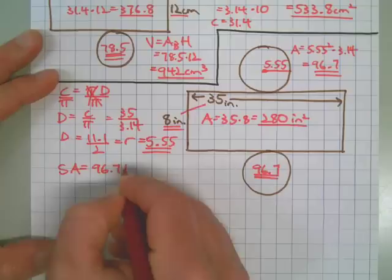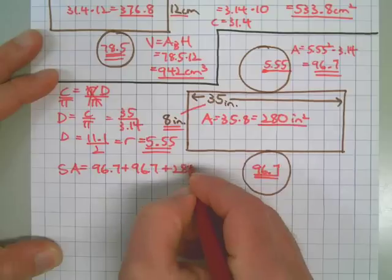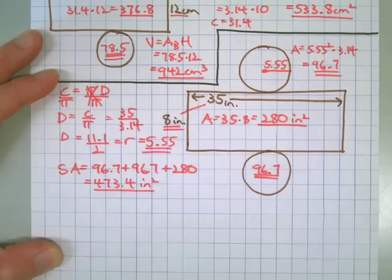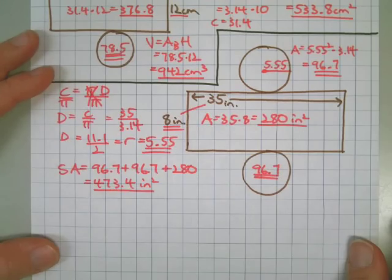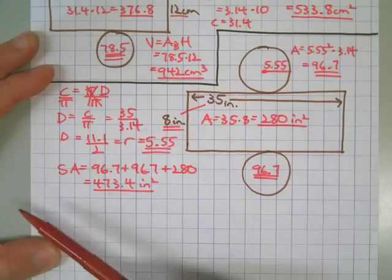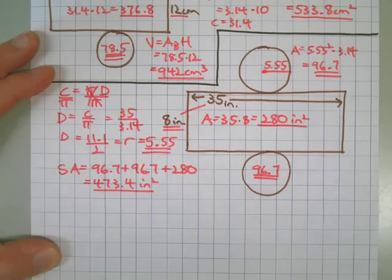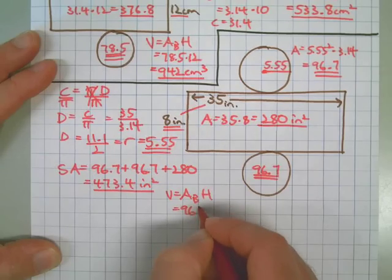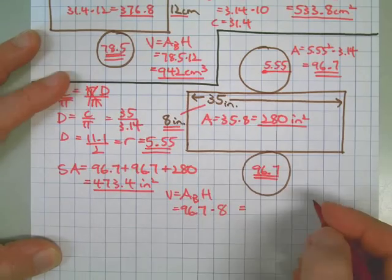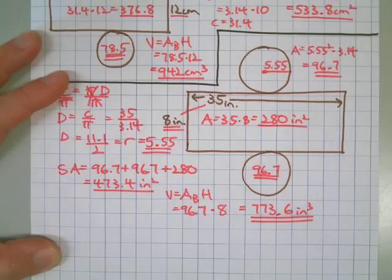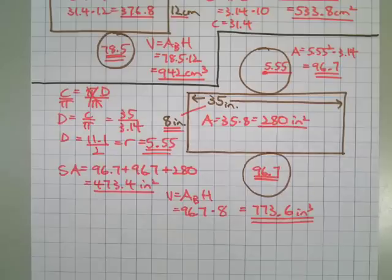Surface area equals base one plus base two plus lateral face, giving us 473.4 square inches. Rounding differences don't matter much — what matters is getting the process right and understanding the connections between circumference, diameter, bases, and faces. If you're off by a tenth or two, no big deal. Finally, volume equals area of the base times the height: 96.7 times 8. That's all I have for you today — hope you had as much fun as I did. See you in class or at the grocery store!